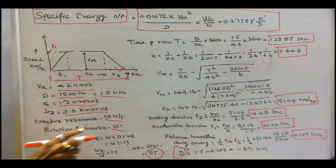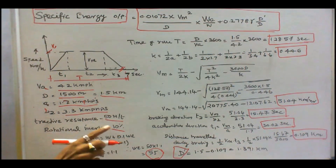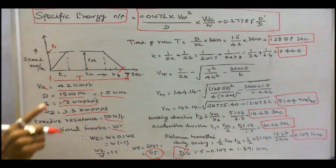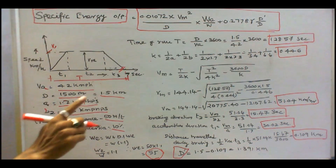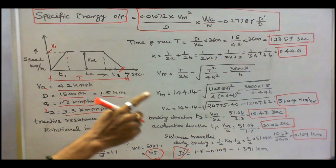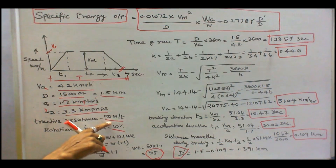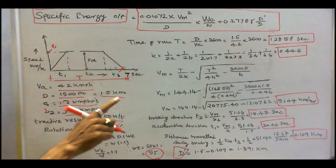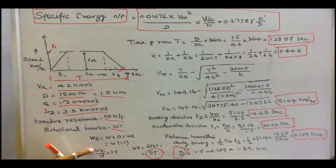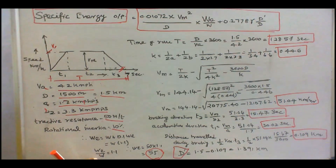Since rotational inertia is 10%, we can find the accelerating weight. Accelerating weight equals dead weight plus 10% of dead weight. Here dead weight is 50, so 50 plus 10% of 50 equals 55. Therefore, accelerating weight divided by dead weight equals 1.1.